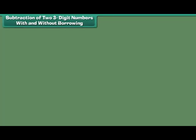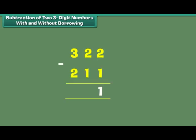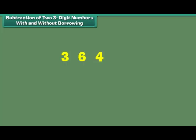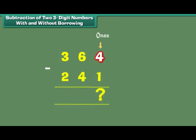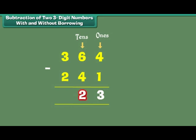Subtraction of two 3-digit numbers with and without borrowing. Let us now perform subtraction on 3-digit numbers. What is 364 minus 241? 4 minus 1 is equal to 3. 6 minus 4 is equal to 2. 3 minus 2 is equal to 1. Therefore, 364 minus 241 is equal to 123.